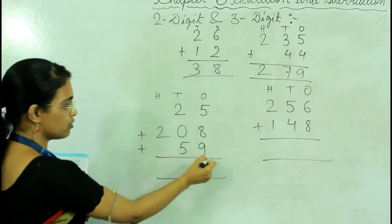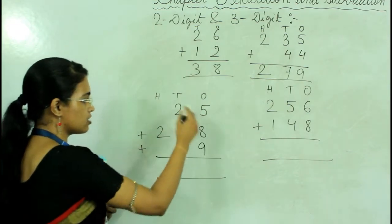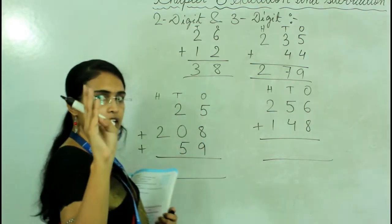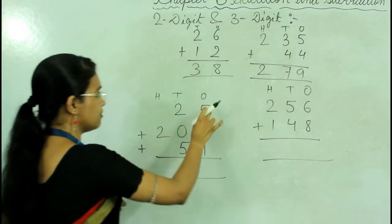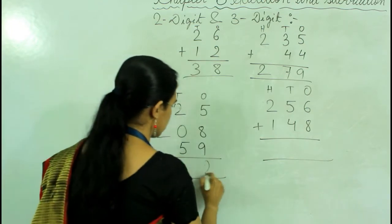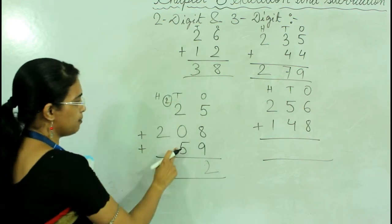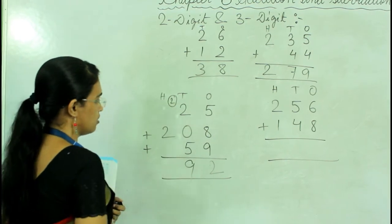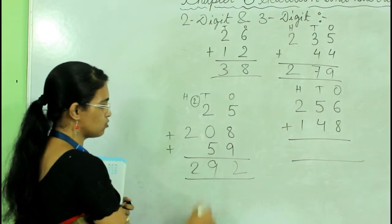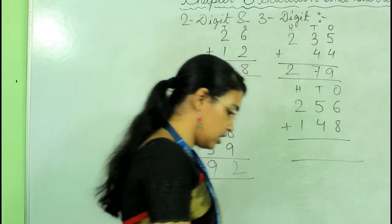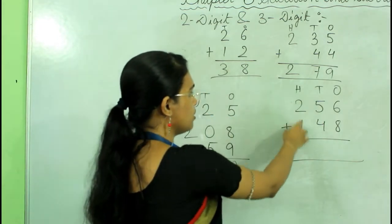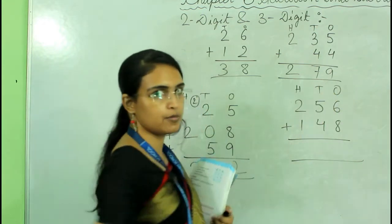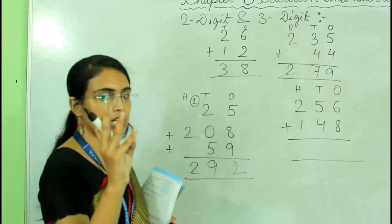Now we have a sum where the top number is 2-digit, the middle is 3-digit, and the last is 2-digit. We add the ones place first: 9 plus 8 plus 5 gives 22, write 2 and carry 2. Then 5 plus 0 plus 2 is 7, plus carry 2 is 9. Then 7 plus nothing plus nothing is 7, giving the answer 292. Our last question has three-digit numbers in both top and bottom; we add the ones: 8 plus 6 gives 14.